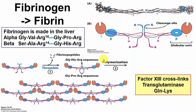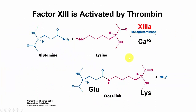Fibrinogen is converted to fibrin when cleaved by thrombin. Thrombin makes cleavages in the alpha chain at arginine 16 and glycine, and similarly in the beta chain. These small peptides are cleaved off — two alphas and two betas — and the remaining fragments aggregate to form a loose clot. That loose clot is then stabilized by Factor 13a (transglutaminase), which cross-links glutamines and lysines on the side chains using calcium.